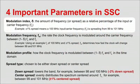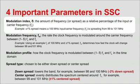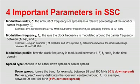The modulation index is the amount of frequency, or spread, as a relative percentage of the input or carrier frequency. The higher the index chosen, the greater the level of EMI reduction. However, the amount of jitter added onto the clock also increases.